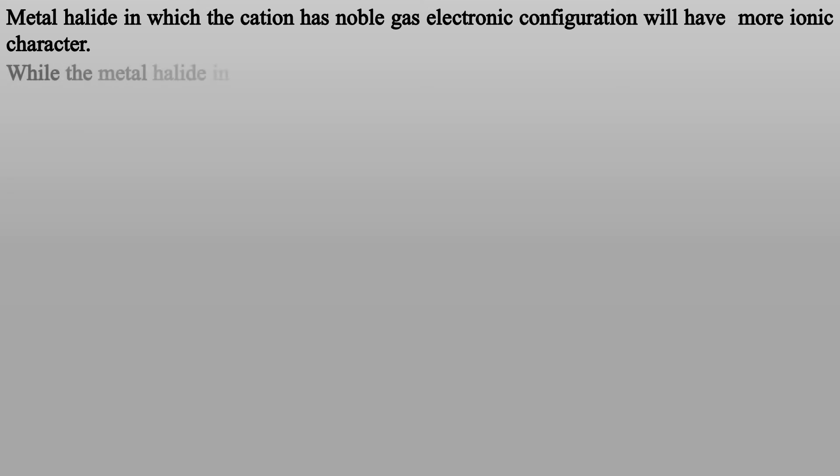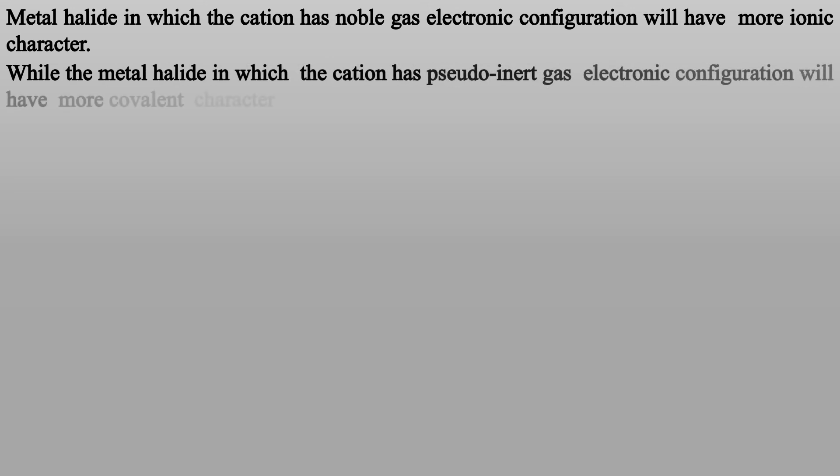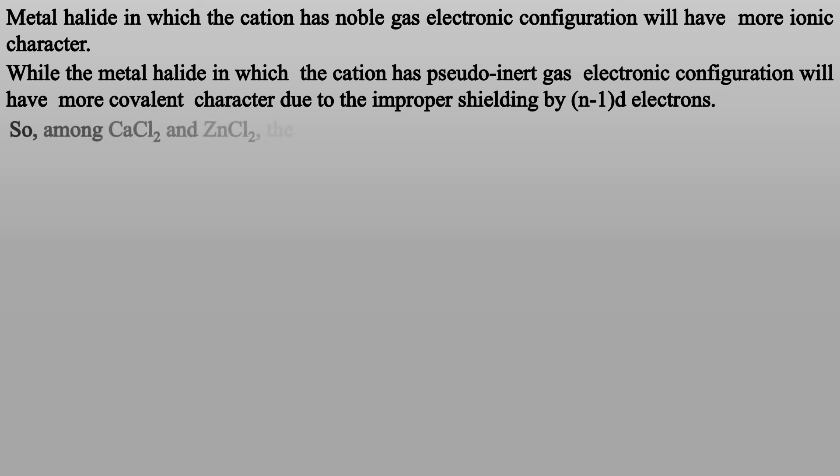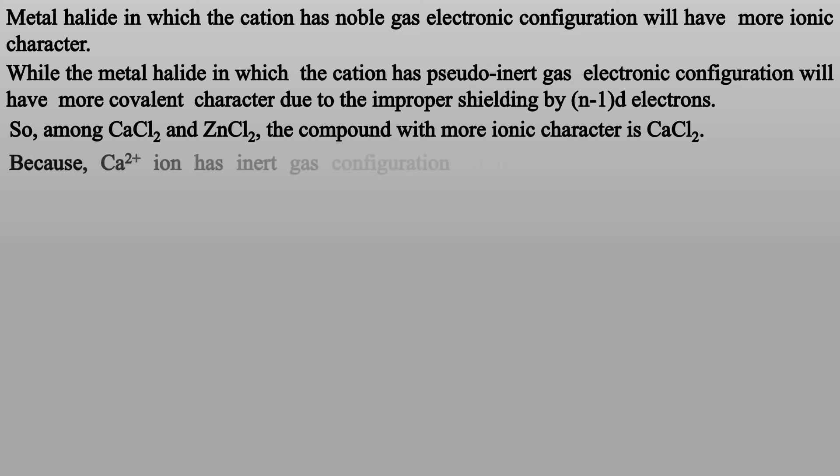Metal halide in which the cation has noble gas electronic configuration will have more ionic character, while the metal halide in which the cation has pseudo-inert gas electronic configuration will have more covalent character due to the improper shielding by (n-1)d electrons. So, among calcium chloride and zinc chloride, the compound with more ionic character is calcium chloride. Because Ca2+ ion has inert gas configuration, while Zn2+ ion has pseudo-inert gas configuration.